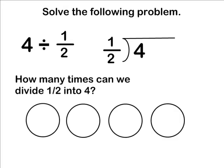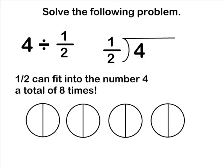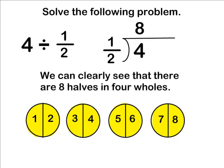By drawing 4 circles, we can clearly see that we can fit 8 groups of 1 half into 4 wholes. Now how do we show the work and still come up with the answer of 8 wholes?